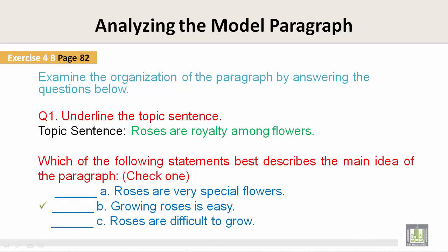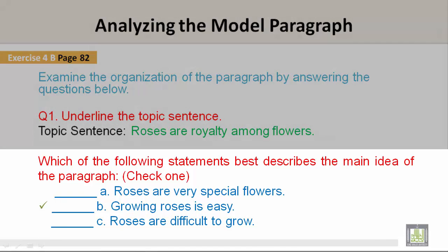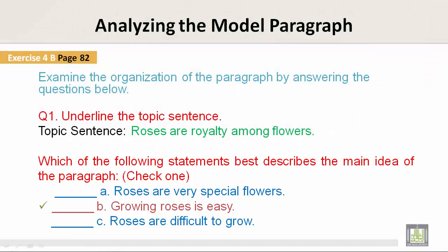The topic sentence is: Roses are royalty among flowers. Which of the following statements best describes the main idea of the paragraph? That would be B: Growing roses is easy.